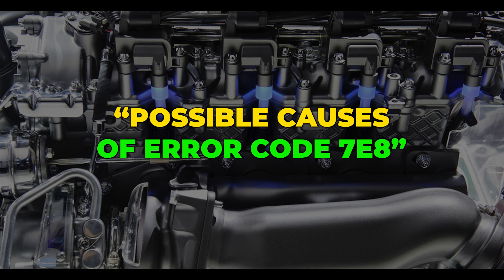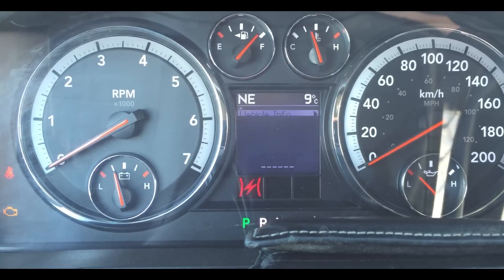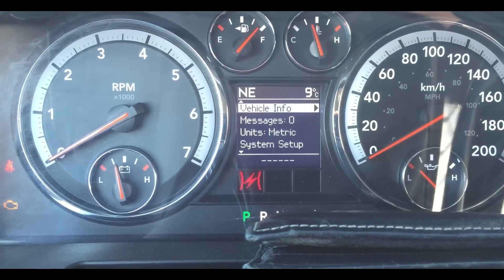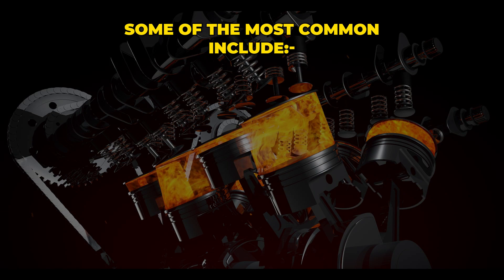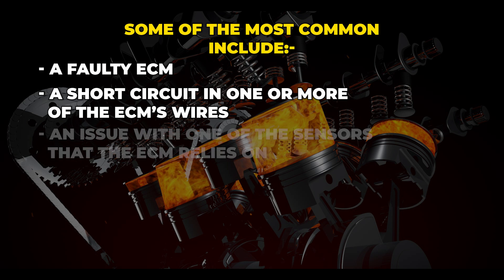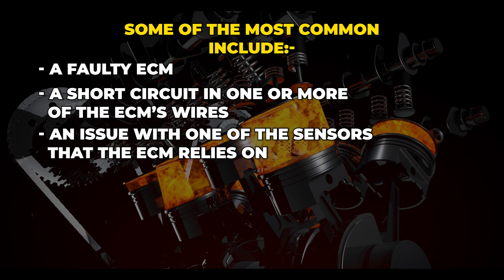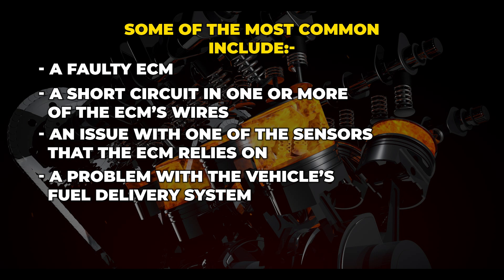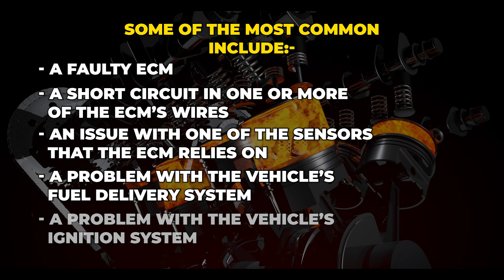There are a number of different things that could trigger error code 7E8. Some of the most common include a faulty ECM, a short circuit in one or more of the ECM's wires, an issue with one of the sensors that the ECM relies on, a problem with the vehicle's fuel delivery system, or a problem with the vehicle's ignition system.